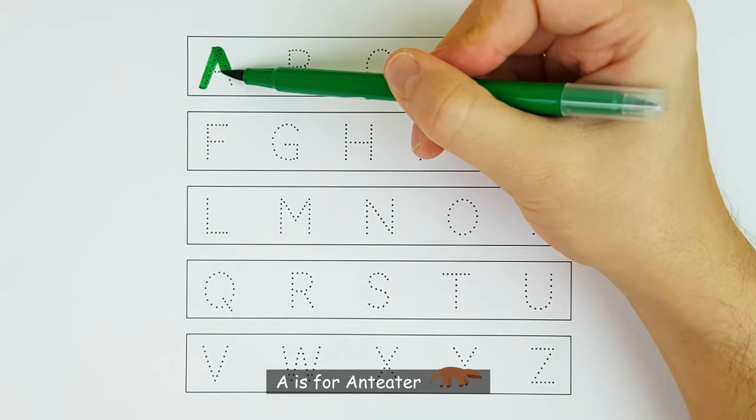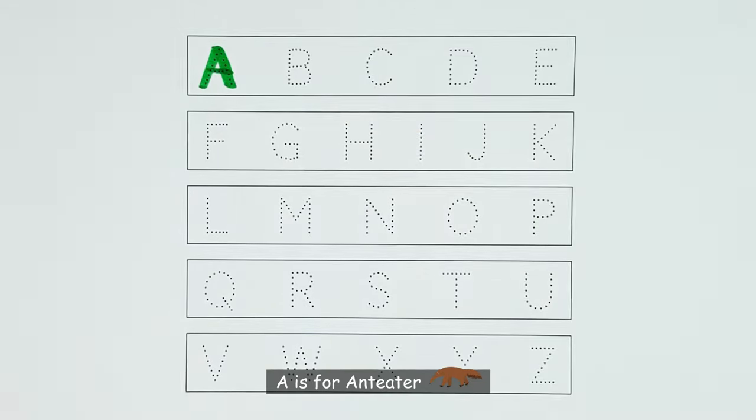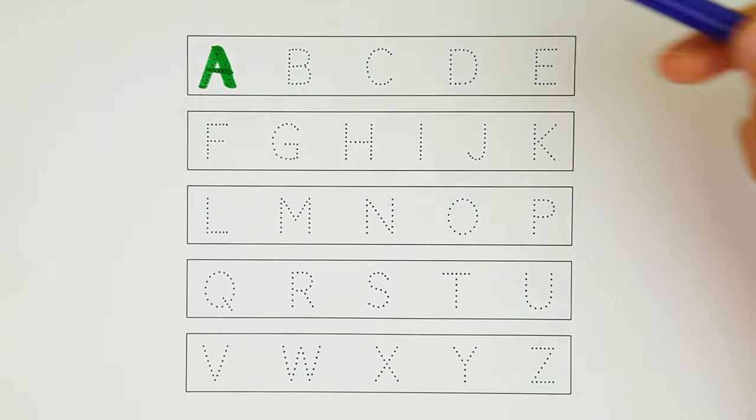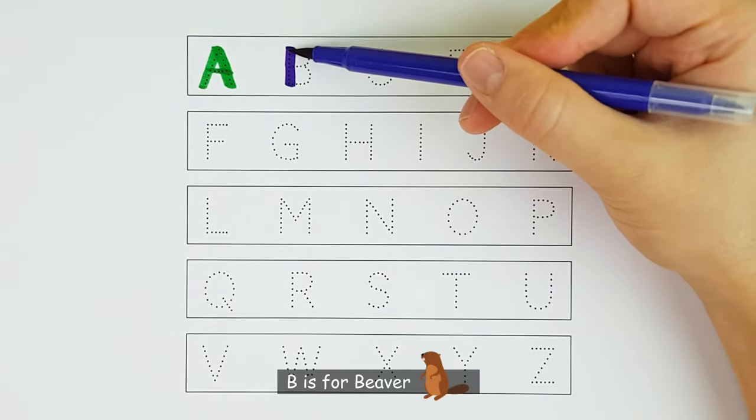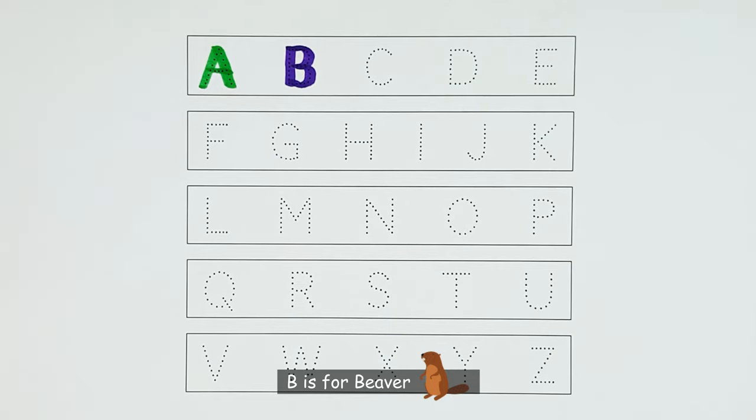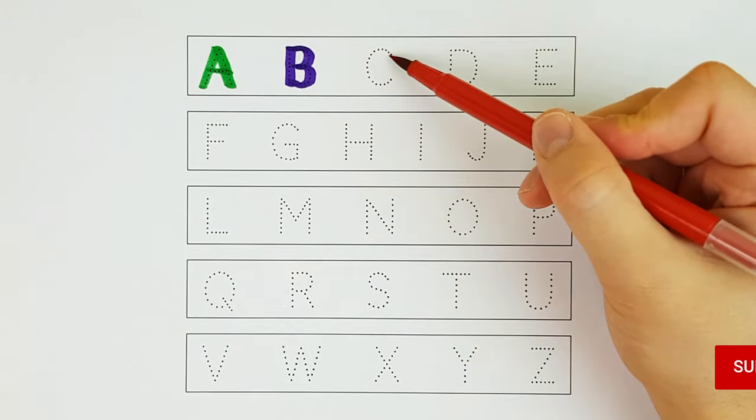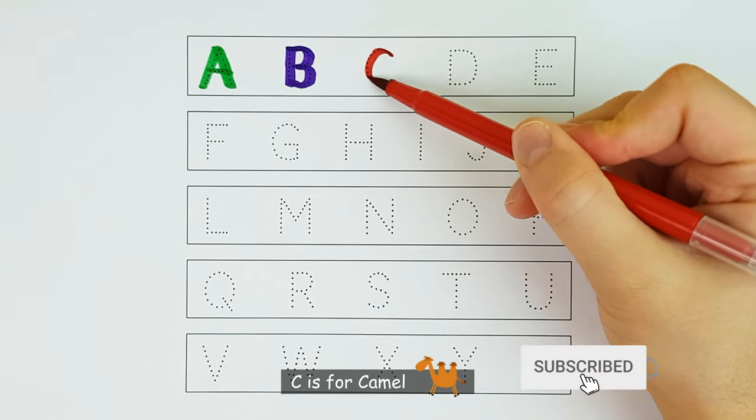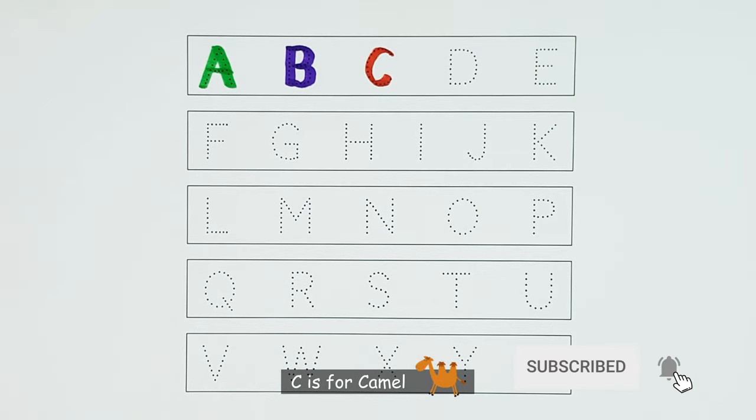A. A is for Anteater. A. B. B is for Beaver. B. C. C is for Camel. C.